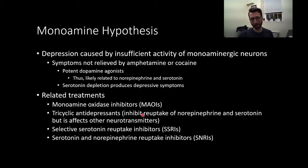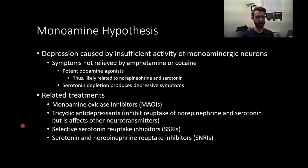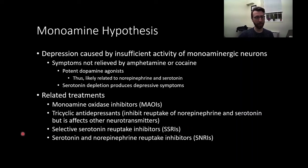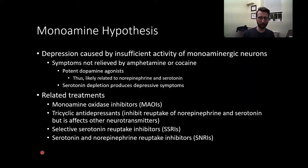We also have tricyclic antidepressants, which inhibit the reuptake of norepinephrine and serotonin, but they're not very selective — they also affect other neurotransmitters. Reuptake is one of the ways neurotransmitter signaling is terminated: the releasing neuron takes the neurotransmitter back into the cell. Preventing that process artificially increases the amount available in the synapse and keeps it there longer. Selective serotonin reuptake inhibitors, SSRIs, are much more selective and zeroed in on increasing serotonin levels. There are also SNRIs, which work on both serotonin and norepinephrine. Which one works best is highly individual, and often multiple treatment attempts are made before settling on a course.